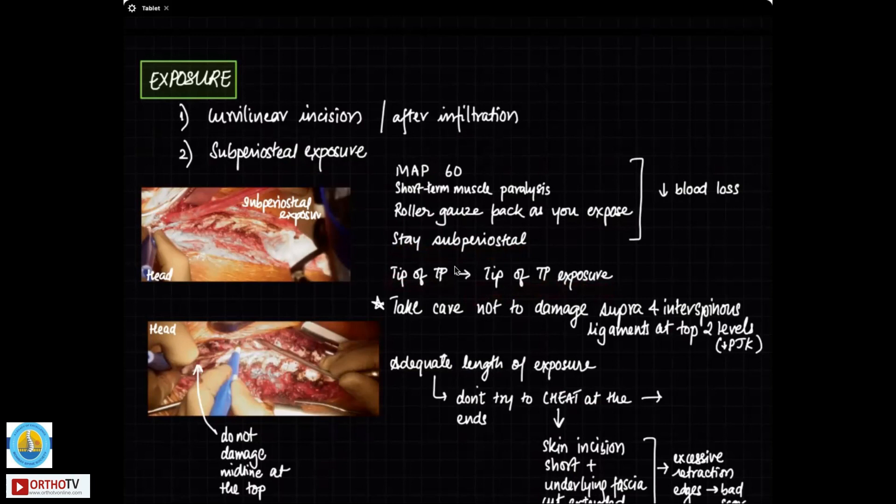Don't do a half-hearted exposure and not expose the TP completely because if you don't expose the TP completely, you will not get good anatomical landmarks and also you won't get a good muscle cover over your implant because the muscle flap needs to be raised and it has to go over the screws. If you don't go till the tip of the TP, you are going to have a lot of dead space in between. Take care not to damage the supraspinous and interspinous ligaments at the top two levels.